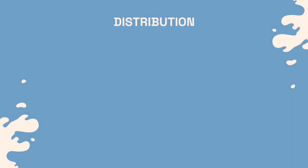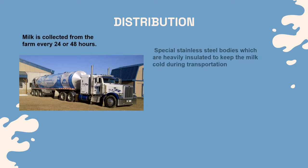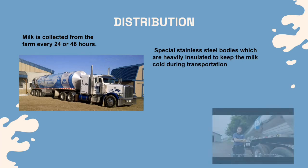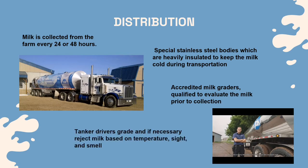In the transportation stage, milk is collected from the farm every 24 or 48 hours. The tankers used have special stainless steel bodies which are heavily insulated to keep the milk cold during transportation to the processing factory. Milk tanker drivers are accredited milk graders, qualified to evaluate the milk prior to collection. Tanker drivers grade and, if necessary, reject milk based on temperature, sight, and smell.